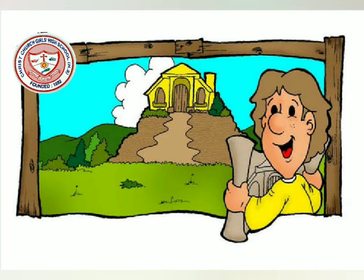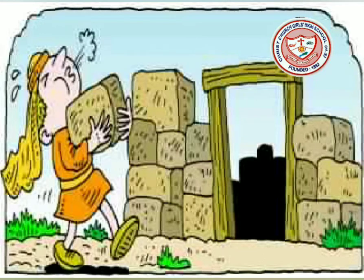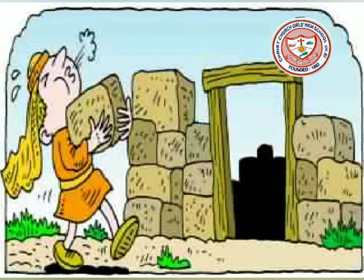The wise man was intelligent, so he made a plan before making his house. He chose rocky land to make his house. Rocky land is solid and hard. So if we build a house on a strong foundation of rock, it will not fall down. Even during storms, flood and rain, a strong house doesn't fall down. So the wise man built his house on a rocky land, and his house was strong.